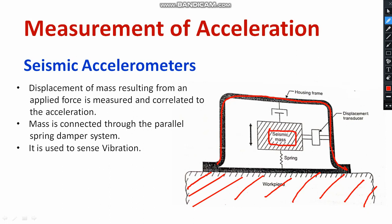Here you can see the damper system and the dashpot. There is also a spring. Basically, it is called a spring-mass-damper system. It is an element of a control system. You might have already discussed the basics of the spring, mass, damper system. I have also prepared a video on this topic — you can check the playlist on control systems.